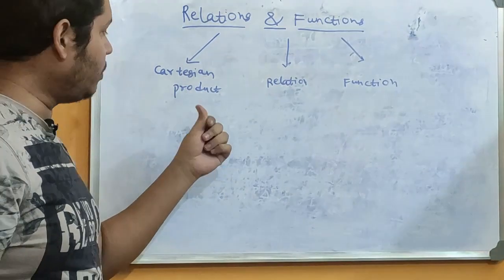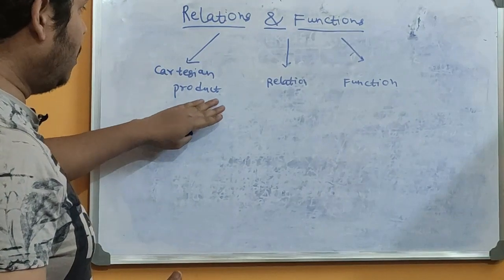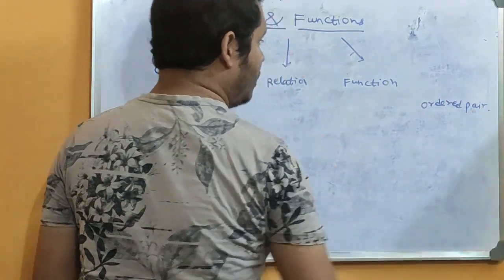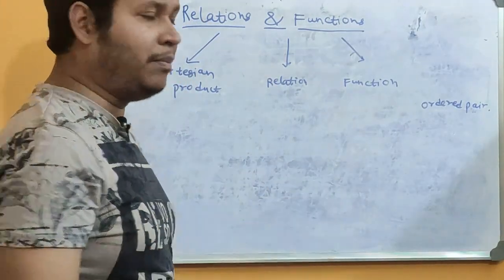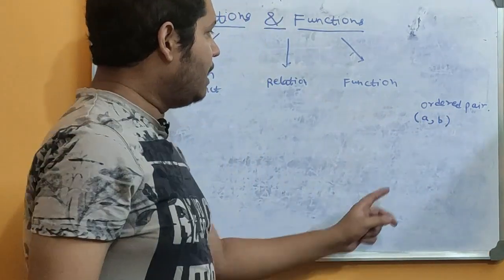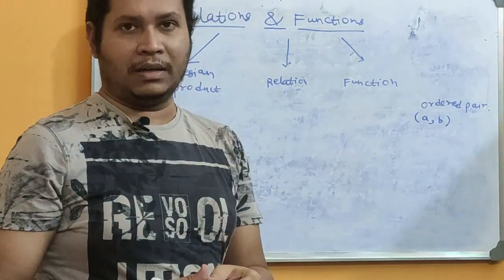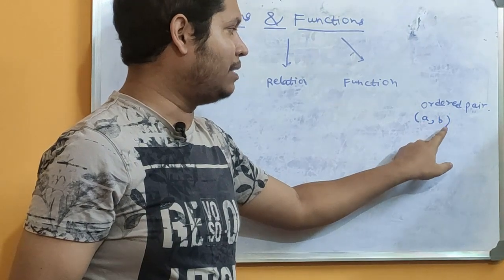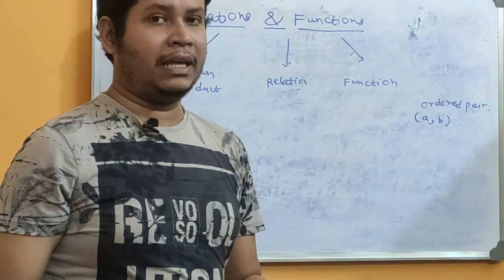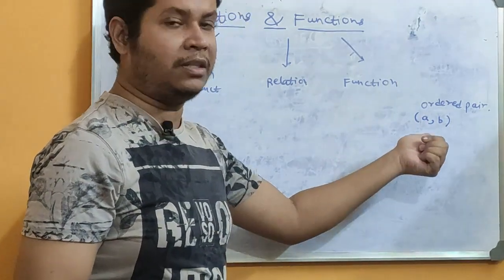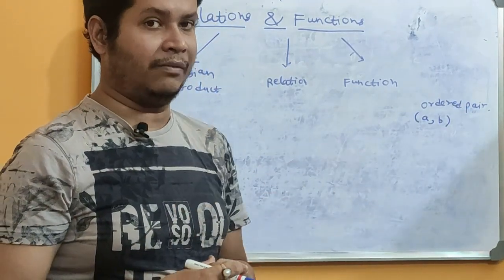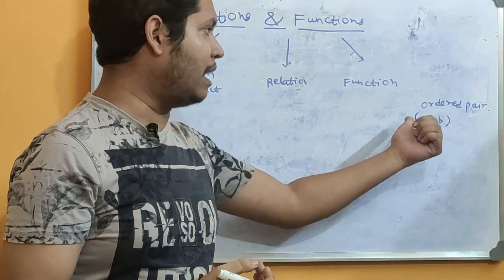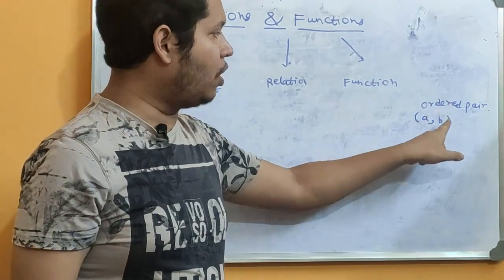So first we are going to begin with the Cartesian product. Now to explain this, let me first start with an example. But before discussing this particular topic, I hope we all are aware of the term 'ordered pair.' Now, an ordered pair basically means that if we write two elements together — suppose A, B — A should be in the first place, B should be in the second place. 'Pair' means there are two things, and 'ordered' means A, B and B, A are not the same thing. Order matters.